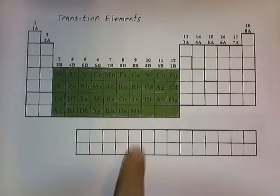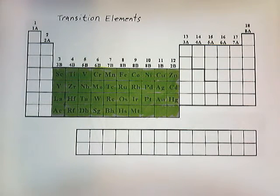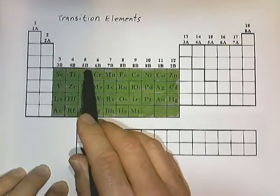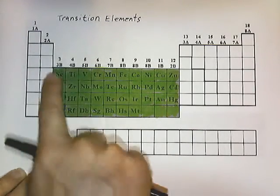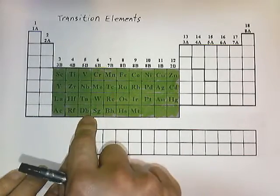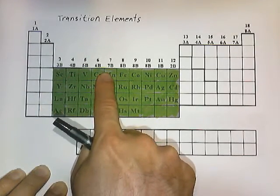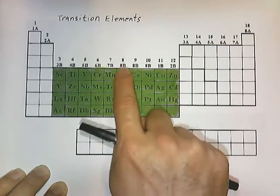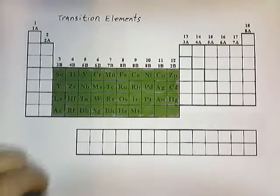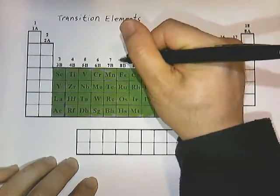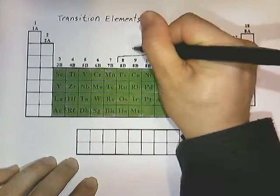Here are our transition elements highlighted in green. Notice that alternate labels are used on the columns. Groups 3 through 7 are labeled 3B, 4B, 5B, 6B, and 7B. Groups 8, 9, and 10 are collectively labeled as 8B.